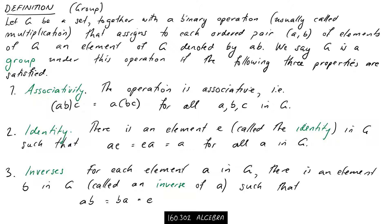First, let G be a set together with a binary operation, usually called multiplication. We have a set and an operation that combines members of the set. With our dihedral group it was the composition of transformations; with our integers it was addition. Notationally we just often write AB, like A times B without the times sign. This set with a binary operation may or may not be a group — to be a group it has to satisfy three extra properties.